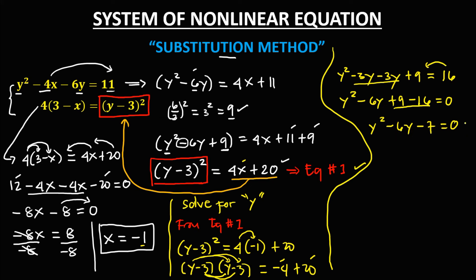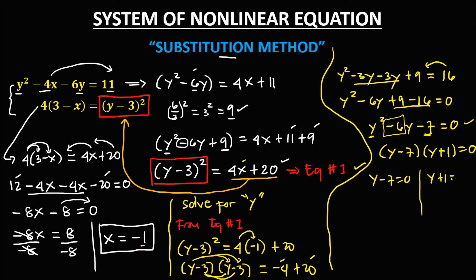From this quadratic equation, apply factoring. Factors of y squared are y times y, and factors of negative 7 are 7 and 1. Since the middle term is negative, the bigger number must be negative, so 7 is negative and 1 is positive. So to solve for y, equate the factors to 0: y minus 7 equals 0 gives y equal to positive 7, and y plus 1 equals 0 gives y equal to negative 1.